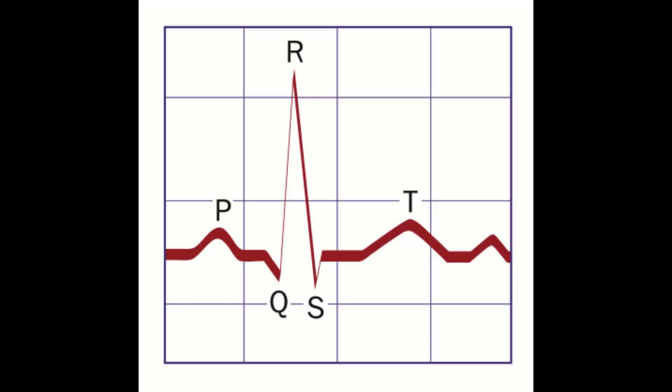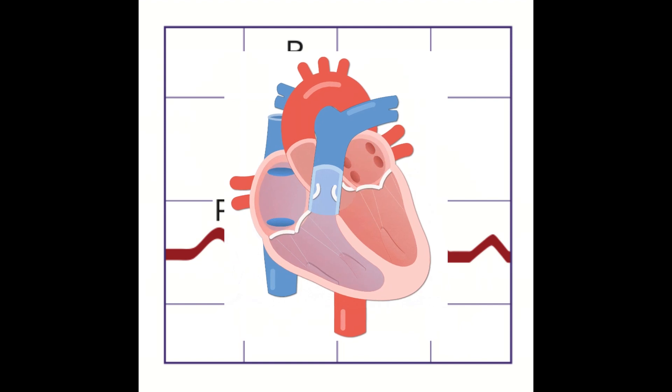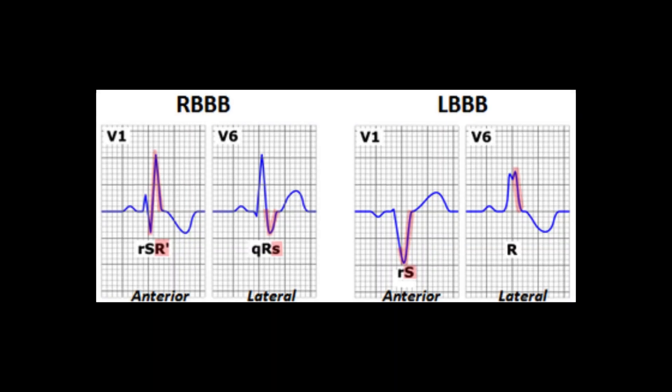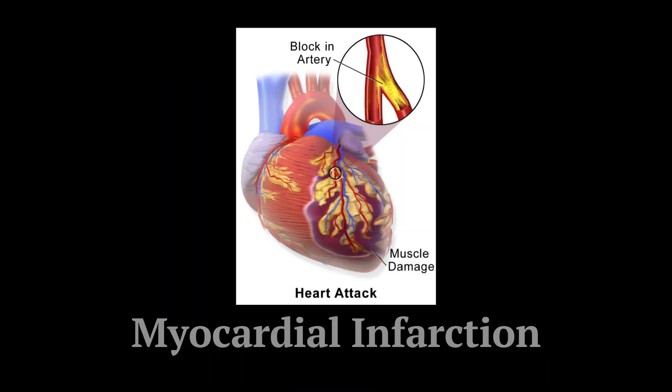The duration and morphology of the QRS complex can provide valuable information about the heart's electrical conduction system and can help diagnose various heart conditions such as bundle branch block, ventricular hypertrophy, and myocardial infarction.